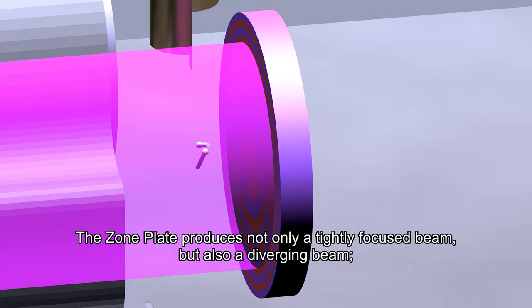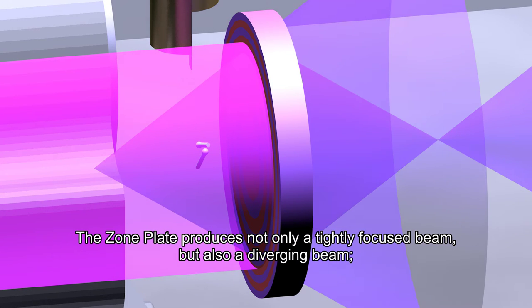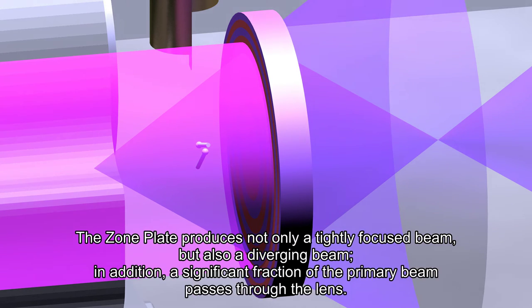The zone plate produces not only a tightly focused beam, but also a diverging beam. In addition, a significant fraction of the primary beam passes through the lens.